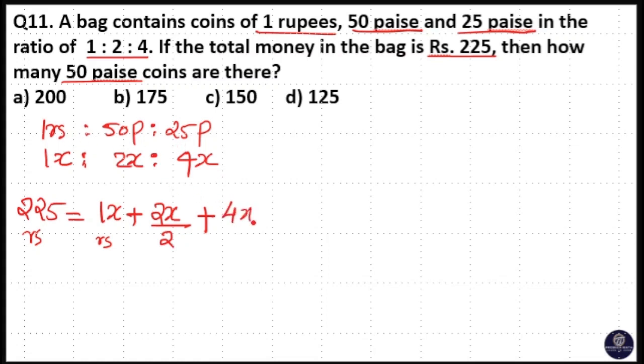So 4x by 4. Now these terms in rupees are equal to: 2 cancels, 4 cancels - that is x plus x plus x, which is 3x. So x is equal to 225 divided by 3, that means 75.